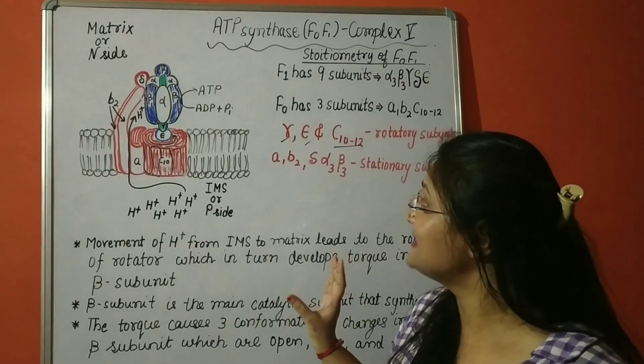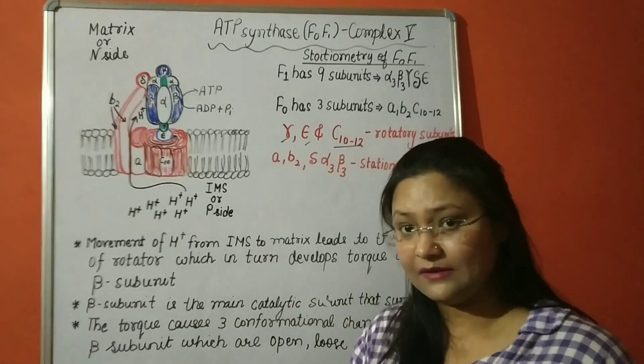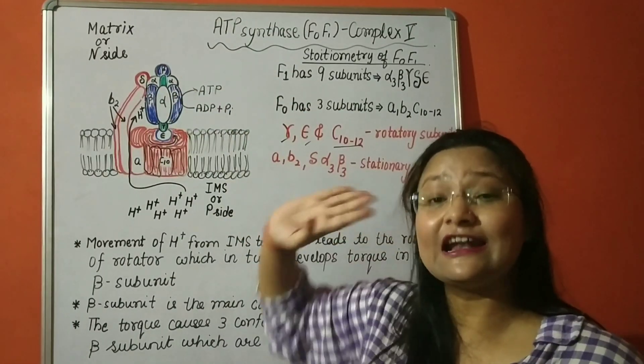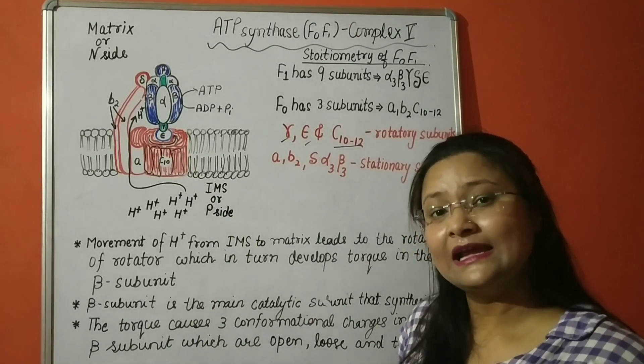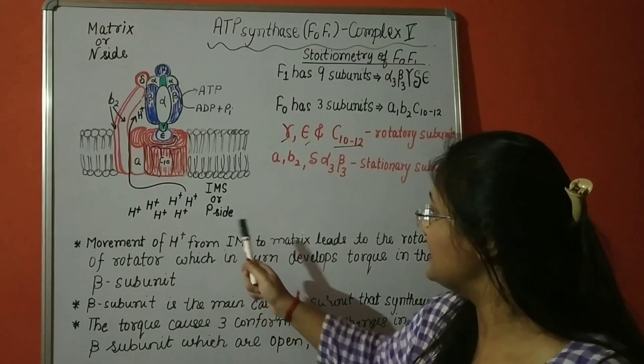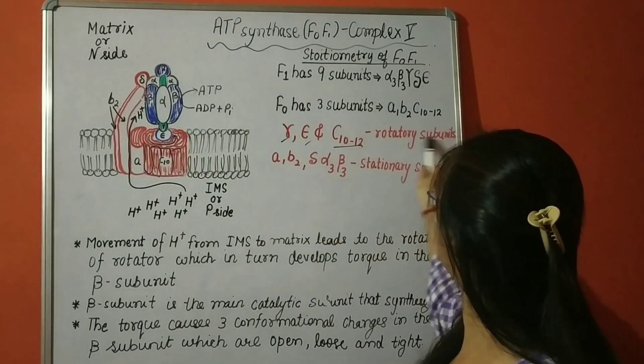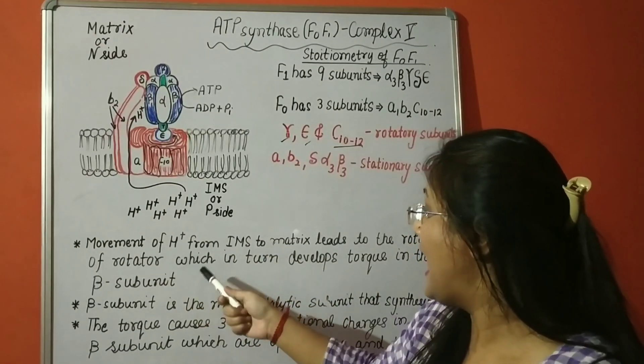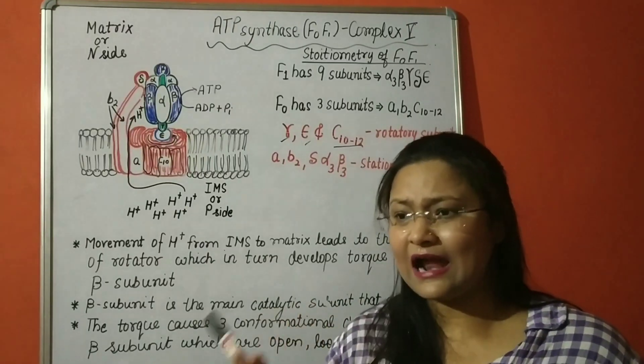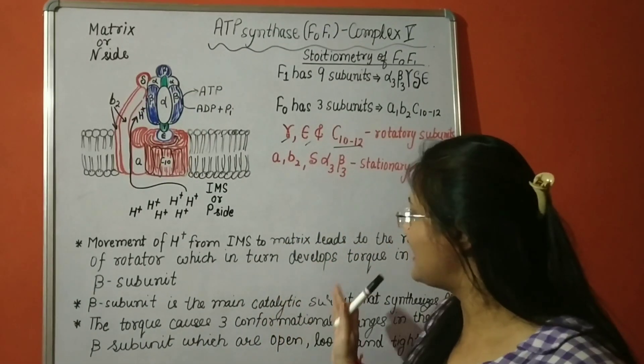This is actually C10 subunit which rotates, gamma and epsilon subunits. And gamma subunit is very important because this is the subunit which interacts with beta subunits which are the catalytic subunits. Movement of H+ from IMS to matrix leads to the rotation of the rotator. And the rotation of the rotator in turn develops torque. Torque means it is a kind of force which acts at 90 degrees. Some kind of force is generated.